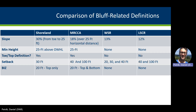Before exploring our online resources, I want to briefly show you how the shoreline program compares to the river-related programs on bluff-related definitions and standards. The shoreline and Mississippi River critical area programs are very similar in that they have quantifiable parameters to more precisely locate bluffs — both specify a height and/or a horizontal distance over which a given slope percent is applied. Neither the Wild and Scenic River nor Lower St. Croix programs use quantifiable parameters, and thus determining a bluff in these areas is a bit more of an art. There are also no toe and top of bluff definitions or a bluff impact zone for either the Wild and Scenic or Lower St. Croix programs.